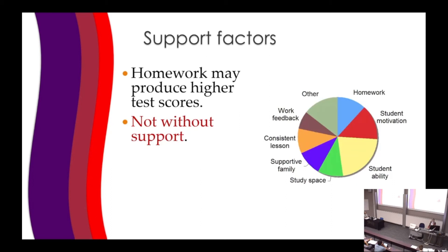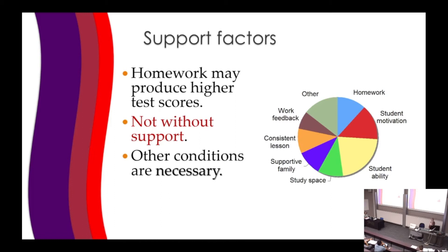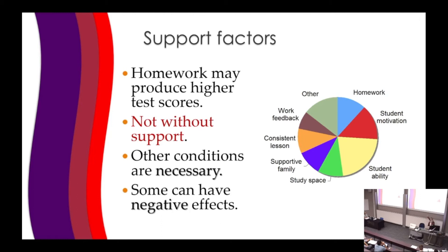Support factors. I'll use an example from a friend who works on homework in the US. Homework may produce higher test scores — you have to know what kind of homework — but not without support or moderator variables in place. One set of moderator variables: student motivation, student abilities, study space. These conditions are necessary. They're not necessary for homework to always do some good, but to achieve the level of effectiveness studied. If any of these are missing, you don't get that level of effectiveness. If too many are missing, homework can actually have negative effects — students get dispirited or disdainful.